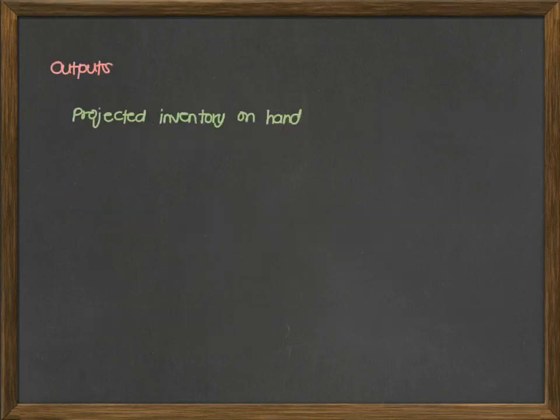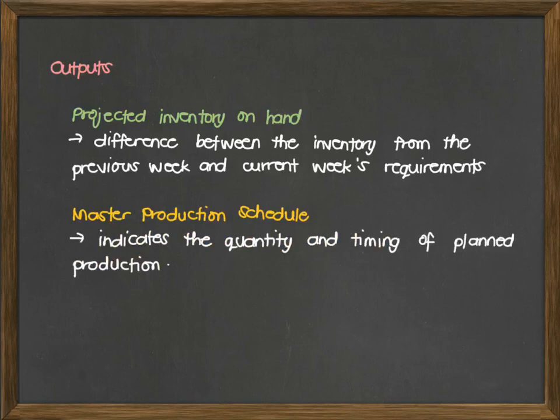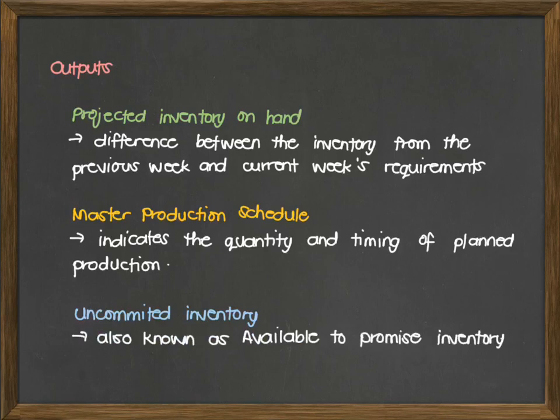For our outputs, we have the projected inventory on hand, which is the difference between the inventory from the previous week and the current week's requirements. Second is the master production schedule, which indicates the quantity and timing of planned production. And lastly, your uncommitted inventory, also known as the available-to-promise inventory.